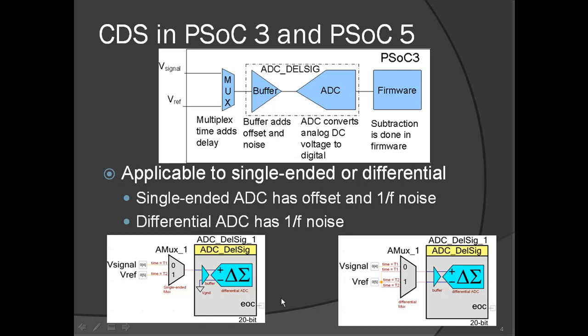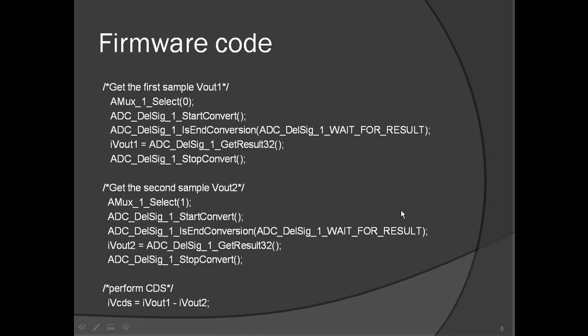The connections required for CDS with single-ended and differential ADCs in Creator are shown in these figures. In the case of single-ended ADC, CDS is helpful in eliminating both offset and noise. In a differential ADC, the offset is inherently eliminated by the differential signal itself, and thus CDS is used only when low-frequency noise reduction is required. To reduce high-frequency noise of the signal, the CDS technique can be followed by an IIR filter, the details of which are provided in application note 2099. The firmware code implementation for CDS is very simple, as shown here — it involves taking two ADC samples and then subtracting the two.